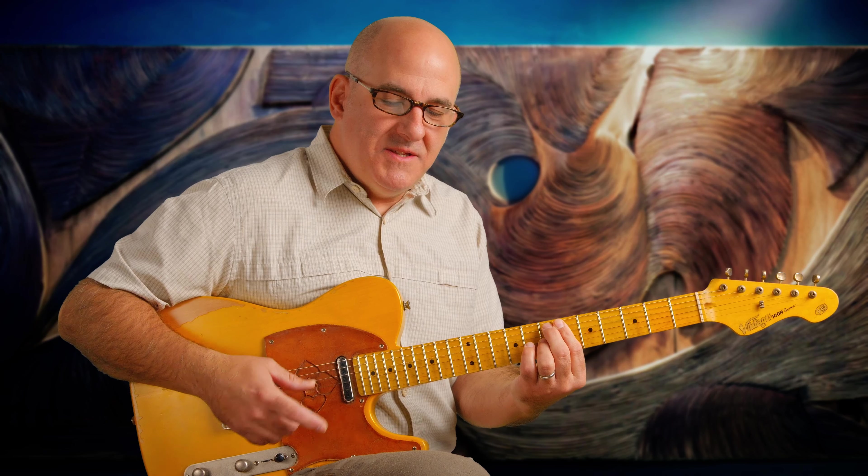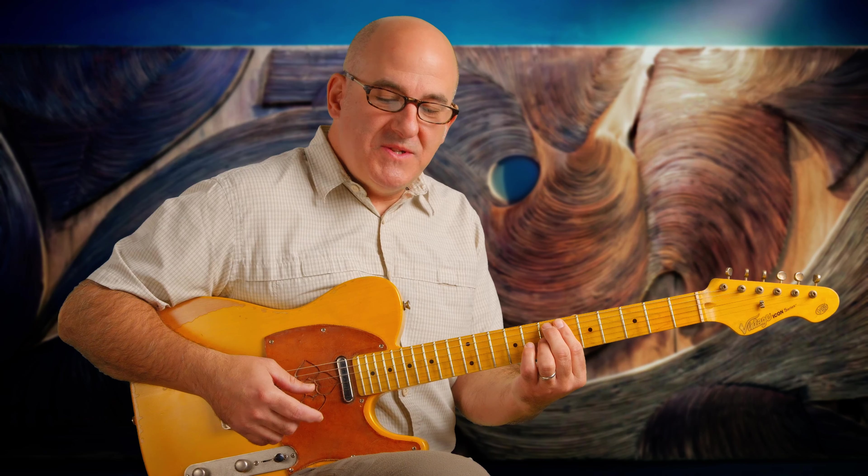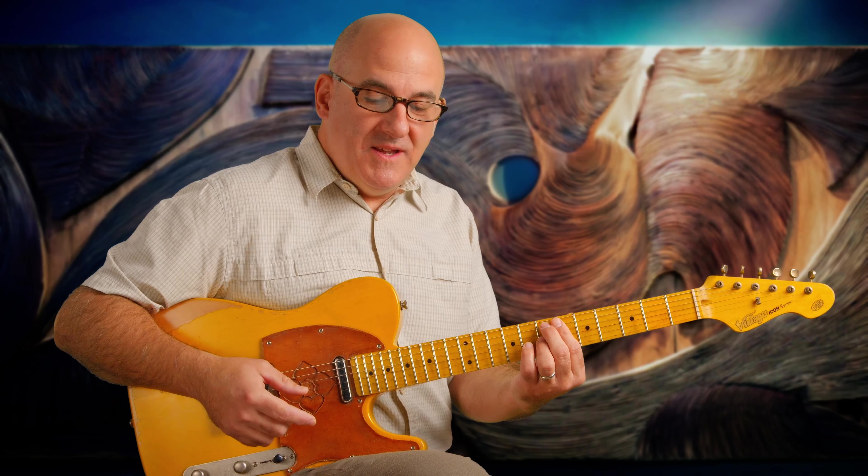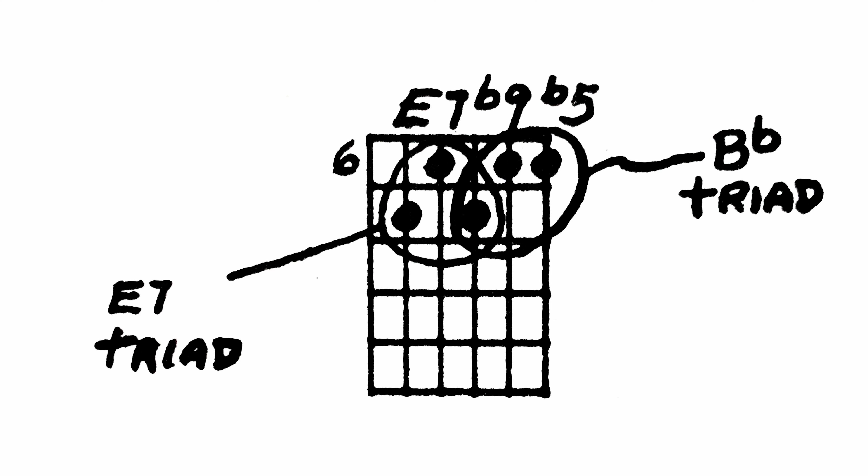In many cases, one note is common to both triads. In the E7b9b5 chord, the common note is the D note. So in the E7b9b5, you actually have an E7 chord and a Bb chord together.